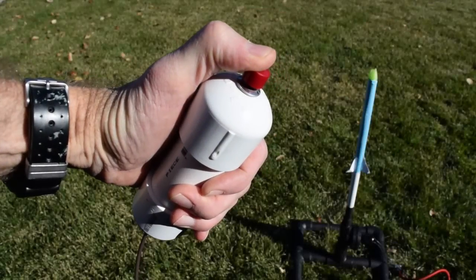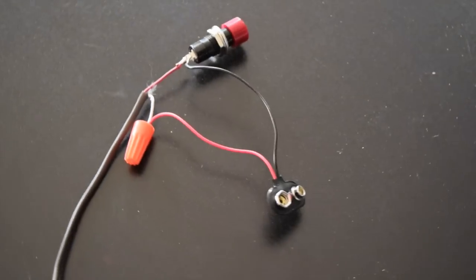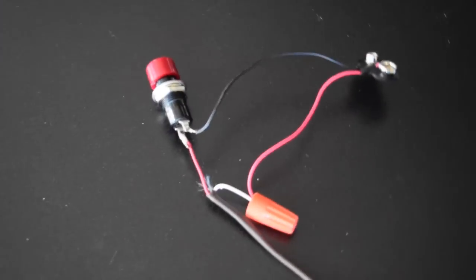After the launch pad was assembled I built the launch controller. A 9-volt battery and a momentary switch are used to trigger the solenoid for the rocket launches.